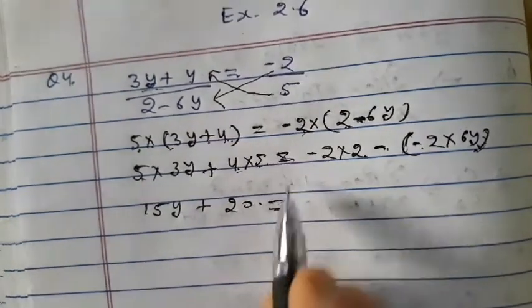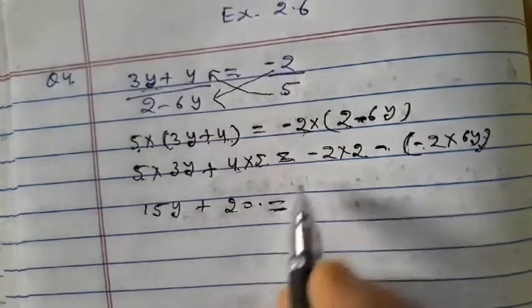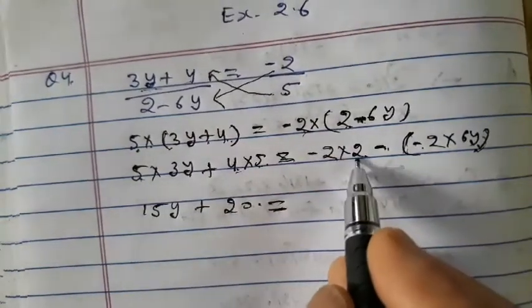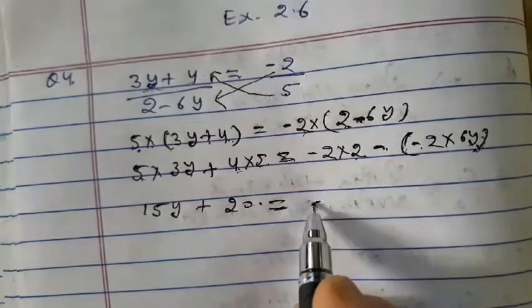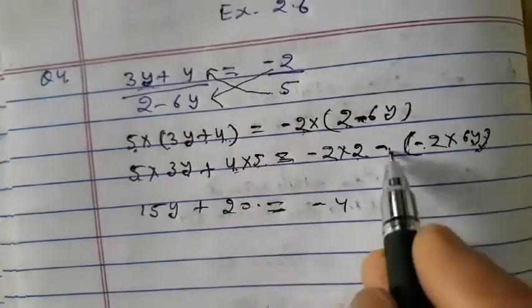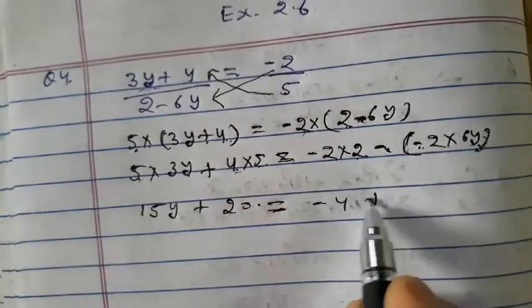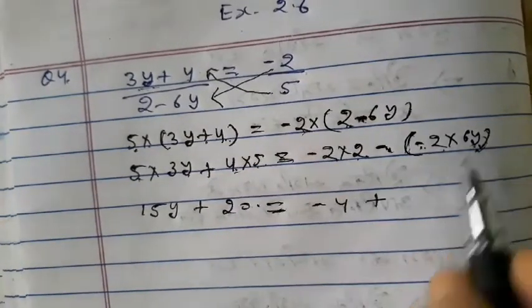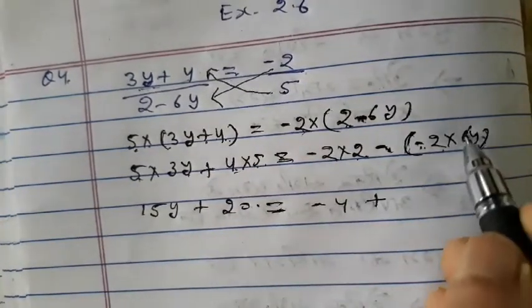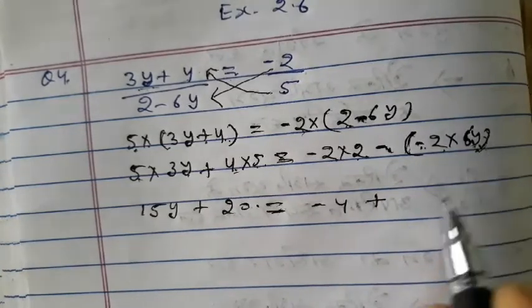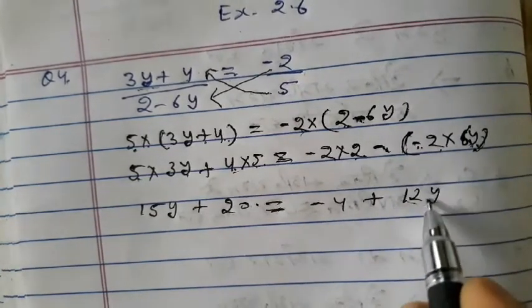Now on the right side: minus 2 into 2 gives minus 4. And minus times minus is plus, so minus 2 into minus 6y gives plus 12y. The right side is minus 4 plus 12y.